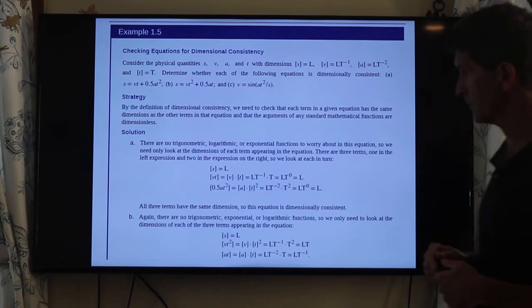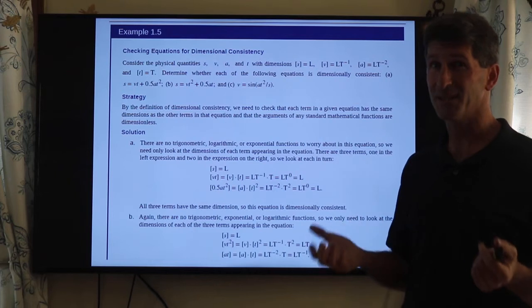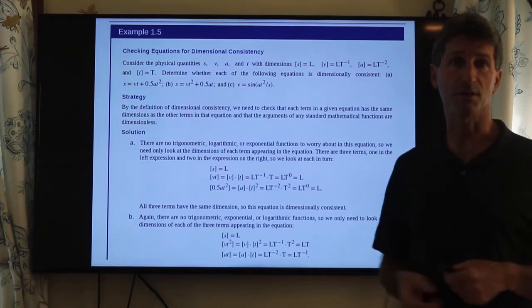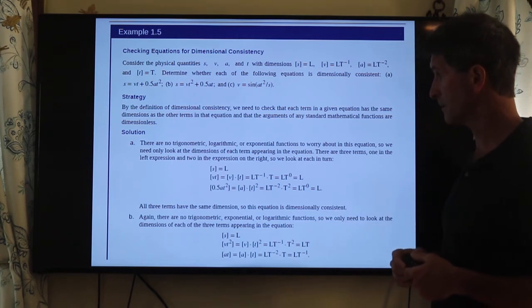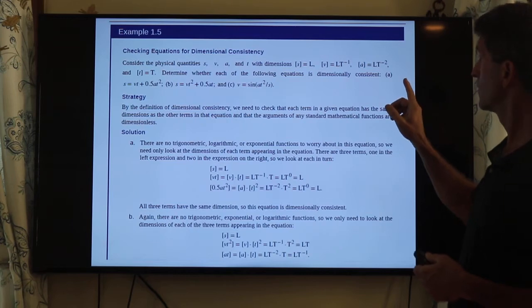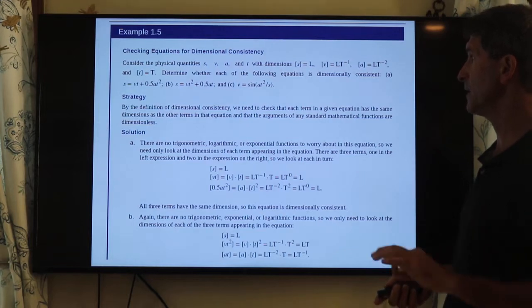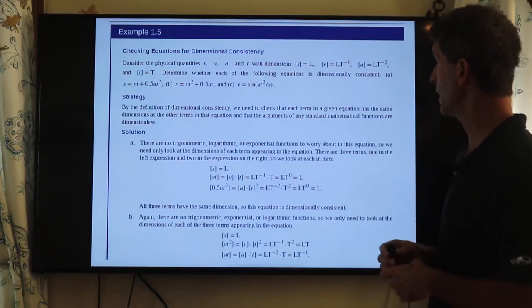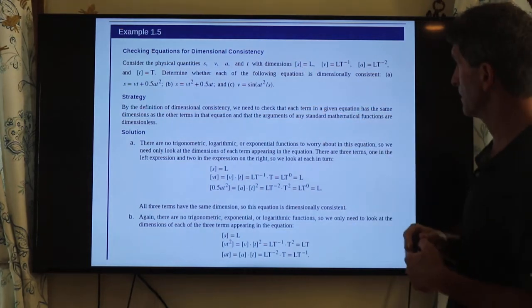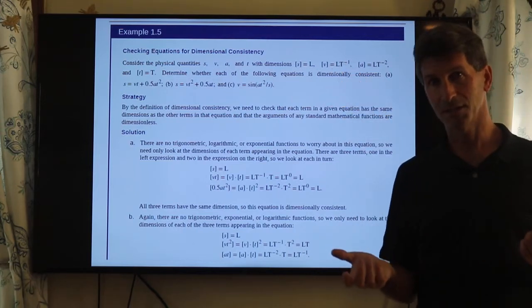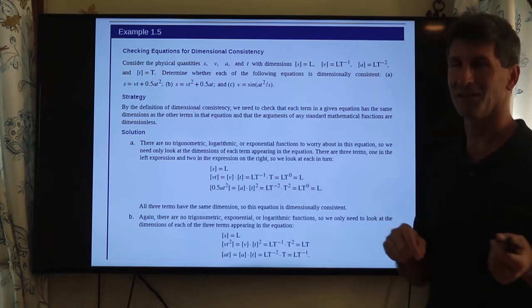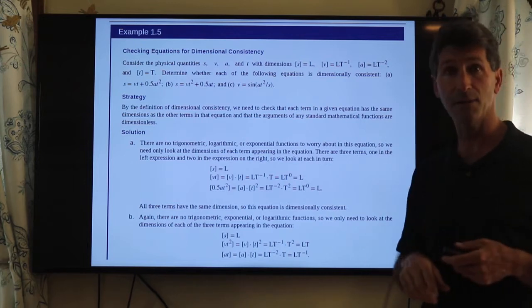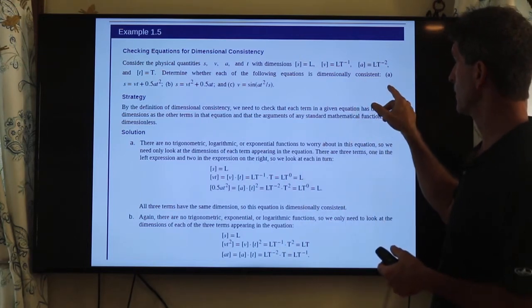Later on, we will be talking about different equations. We'll be looking at distance as a function of velocity, acceleration, and time for constant acceleration. This is a good example right here, which allows you to test whether or not particular equations are consistent. So, for instance, consider the physical quantities: s, which is distance, v, which is velocity, acceleration is a, t is time. So here you can see s is units of length, velocity is length divided by time. That little negative one means one over. It's the multiplicative inverse. And then acceleration is length divided by time squared. Determine whether each of the following equations is dimensionally consistent.